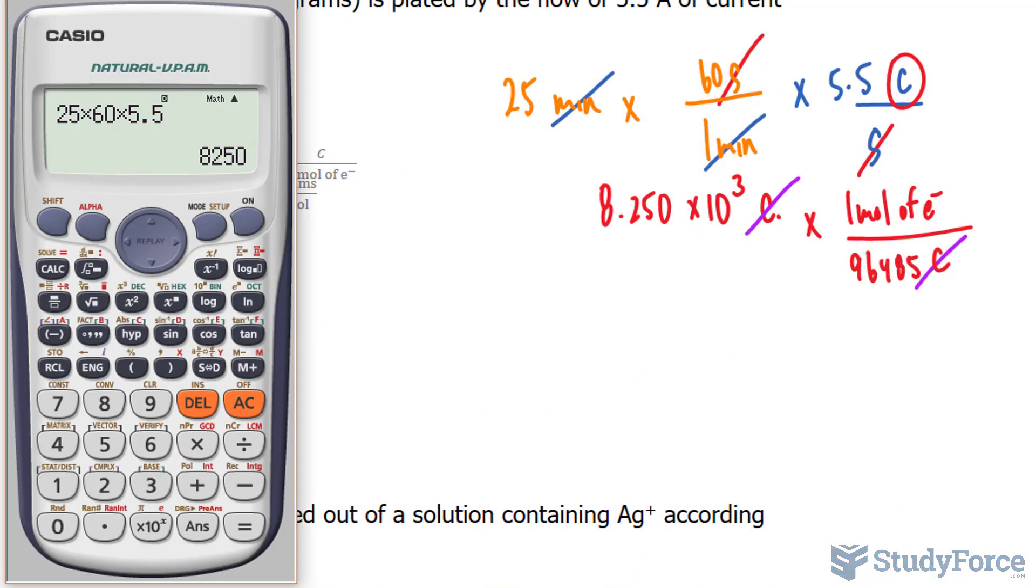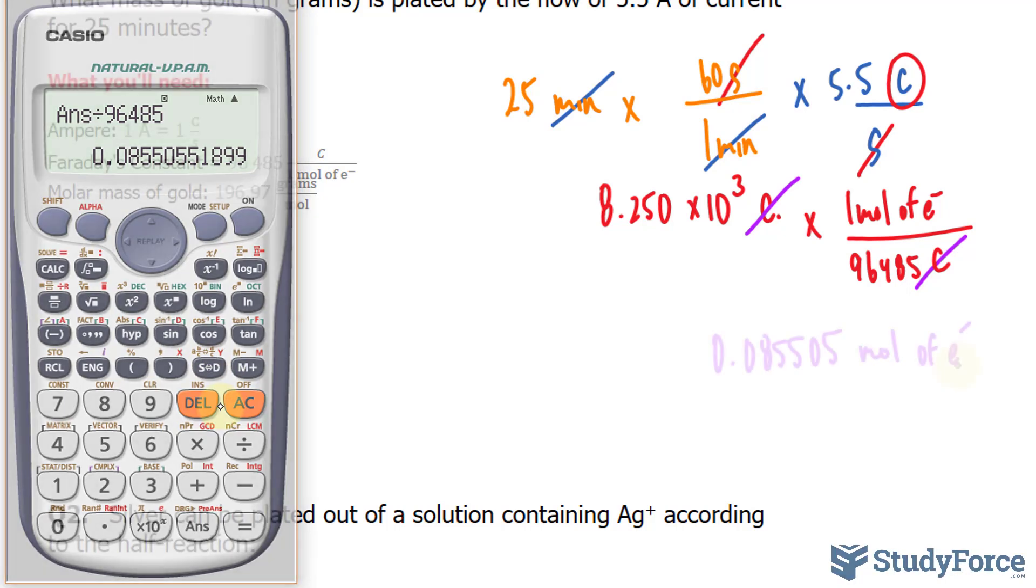Using our calculator again, we'll take the number that's on the screen, divide it by 96,485, and we get 0.85505.